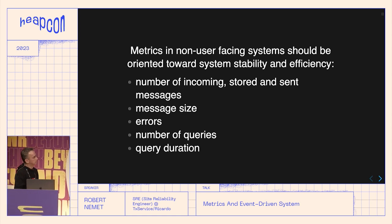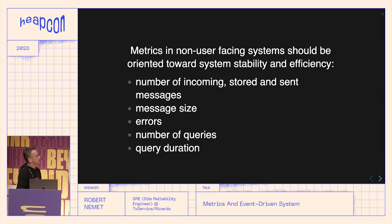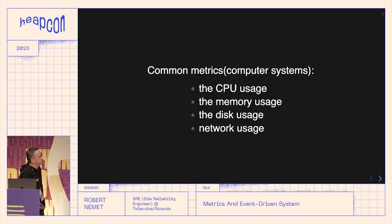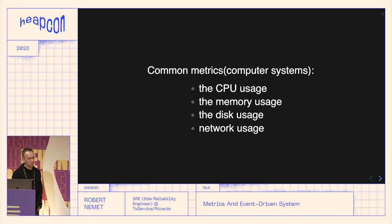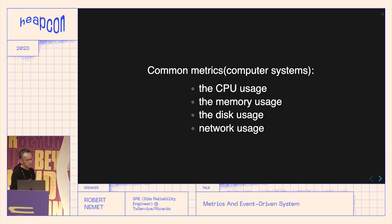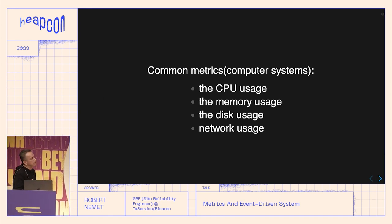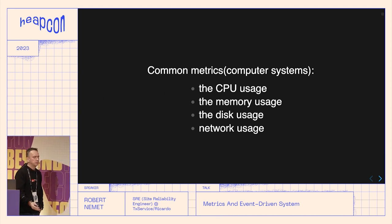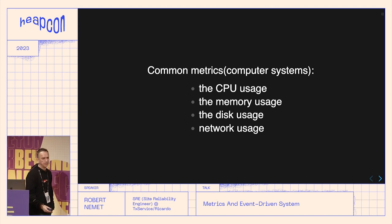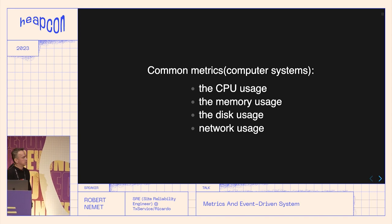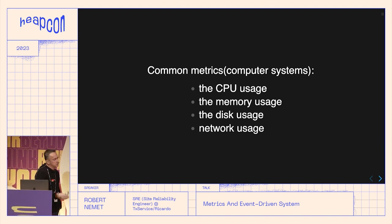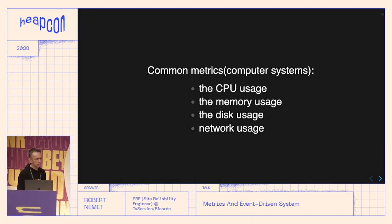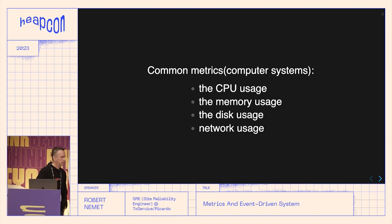Historically, we also have common system metrics like CPU usage, memory usage, disk usage, and network usage. But notice that for user-facing systems, these don't really matter — the user doesn't care about your CPU usage on the frontend; they just need content delivered as fast as possible.